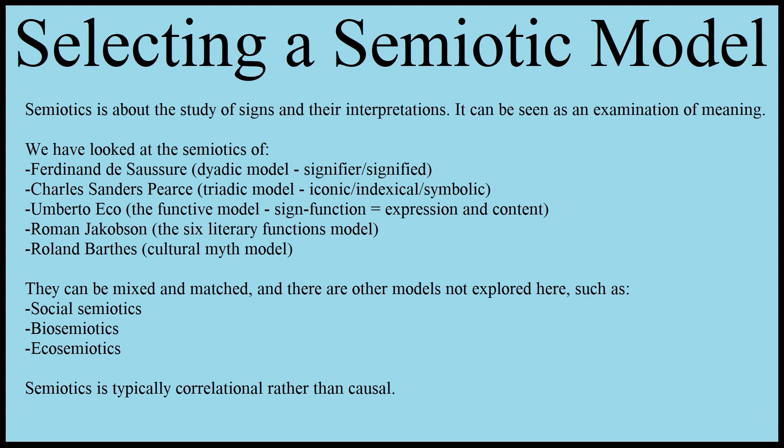The point of this particular video is to talk about which semiotic model you should use if you are doing an analysis of some kind, because it really does depend on what you want to analyze. We're going to be looking at Ferdinand de Saussure and his dyadic model, Charles Sanders Peirce and his triadic model, Umberto Eco with his functive model, Roman Jakobson and his six literary functions model, and Roland Barthes and the cultural myth model. Each of these is a different way of looking at things, and they're all useful depending on what you want to analyze. If you're writing an essay, these can really help as a model, as a methodology, under which you can analyze things.